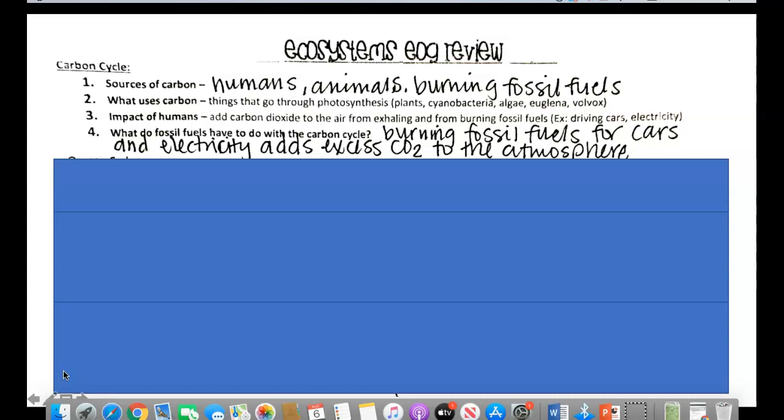Second question, what uses carbon? Things that are going to go through photosynthesis. So that would be plants, cyanobacteria, algae, euglena, volvox. So anything that is going to be photosynthetic.